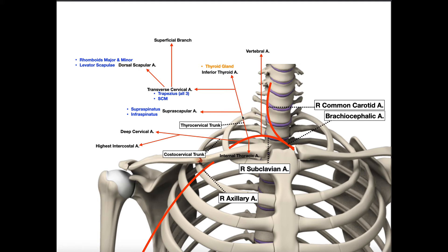The thyrocervical trunk gives off a suprascapular artery, which supplies two of the rotator cuff muscles: supraspinatus and infraspinatus. Interestingly, these two muscles are also supplied by the same nerve, the suprascapular nerve.